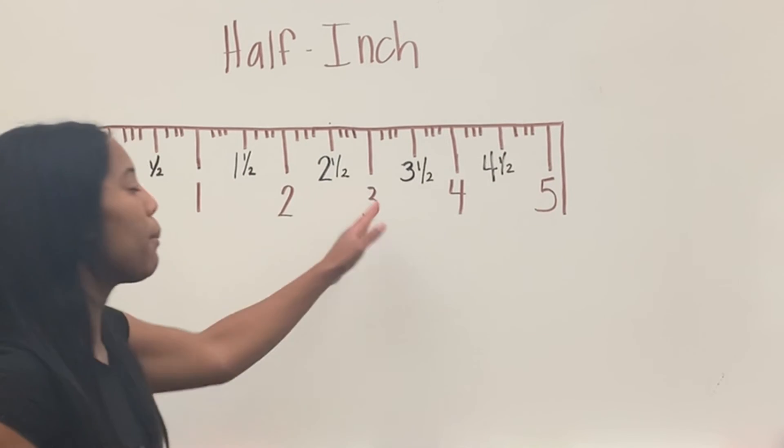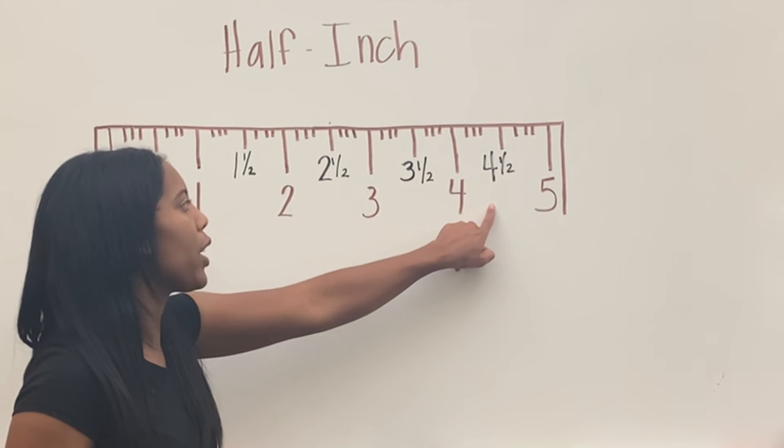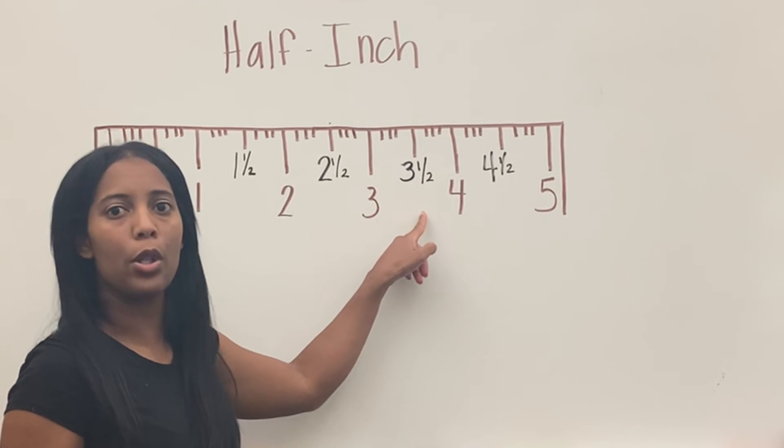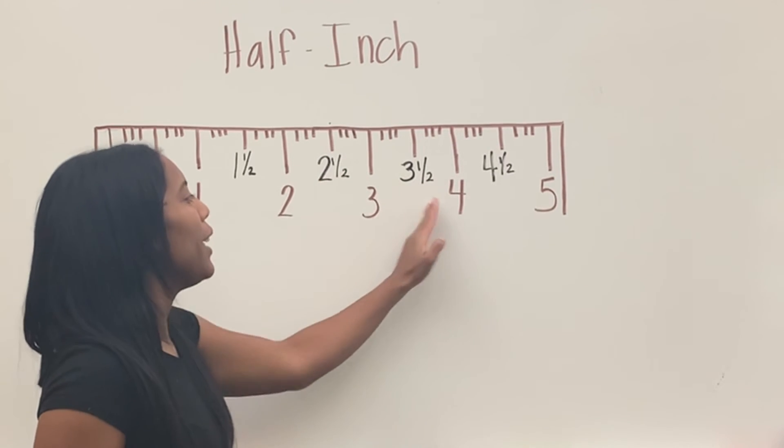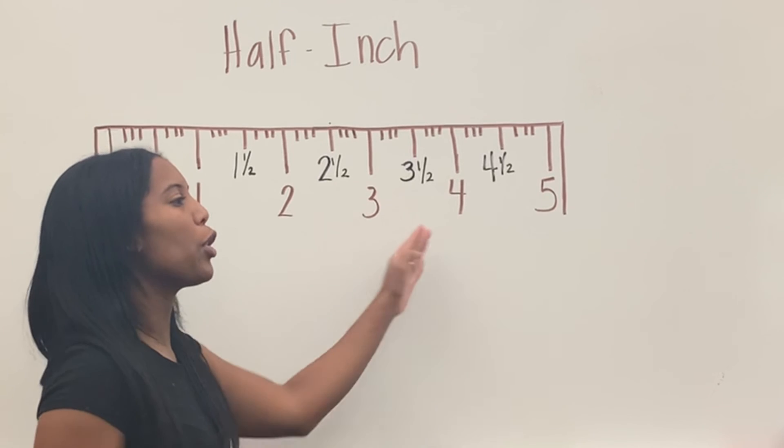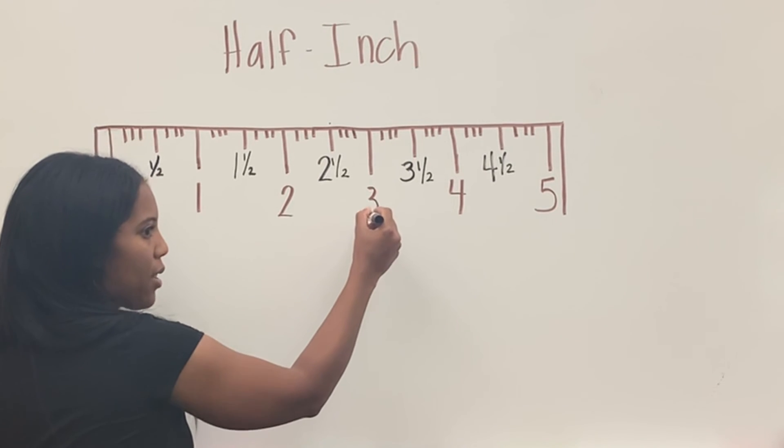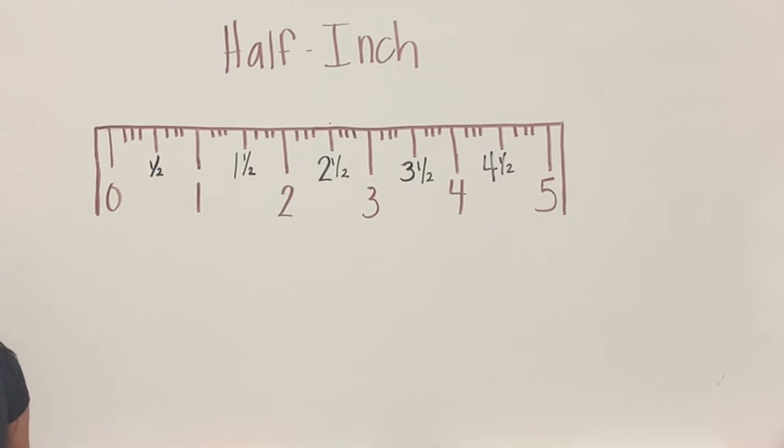You only write the number that it went past, so I can't go past four and then say it was three and a half inches. No, it has to stop in between three and four, and you always go with the number that it just passed up. So that's how you measure to the nearest half inch.